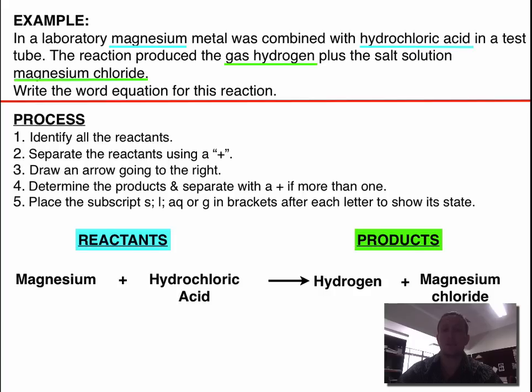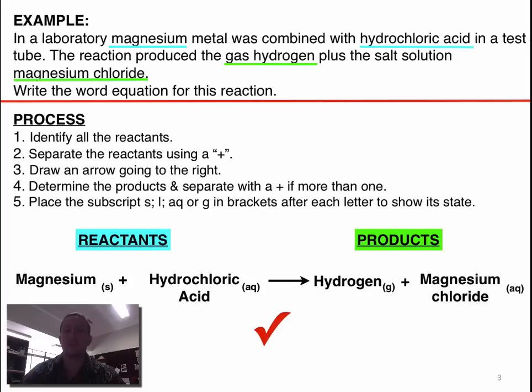The final thing we need to do is put the state down. It says magnesium metal. Well, this was a solid state. We know that hydrochloric acid is a solution, so we put an AQ state.